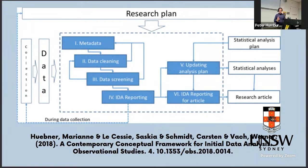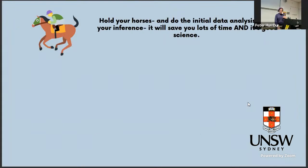Here's another diagram illustrating the research process from a paper. The idea is the same: you go from data collection to initial data analysis, data cleaning, data screening, IDA reporting, updating your analysis plan, then statistical analyses, and finally writing your research article.